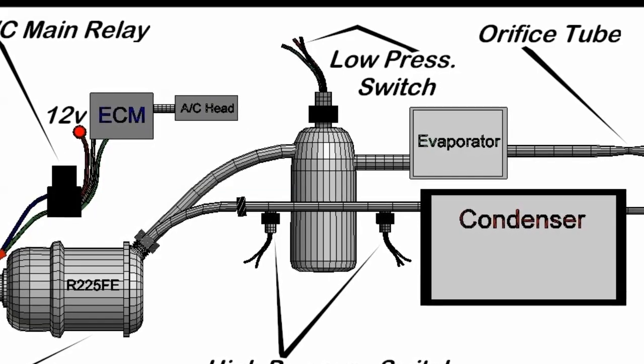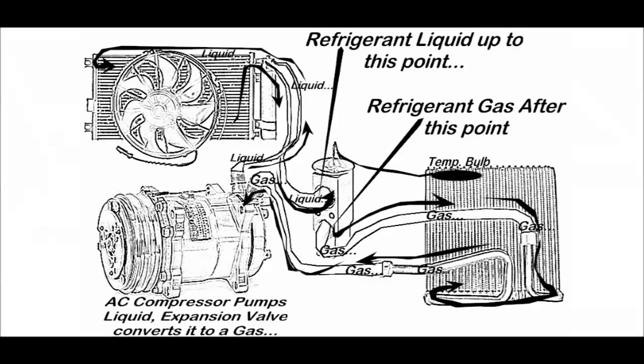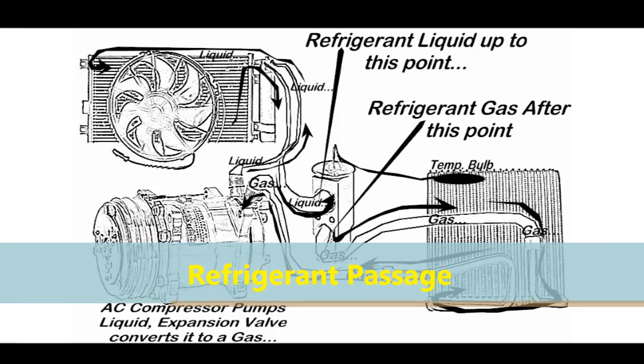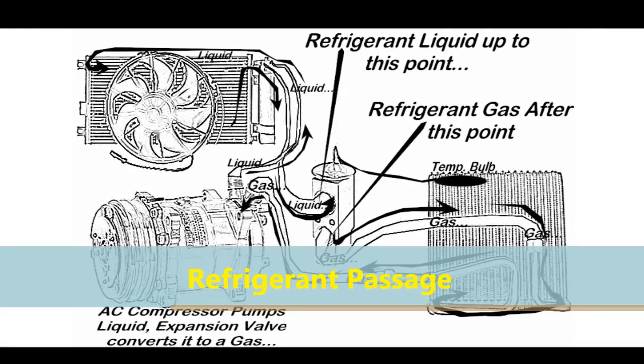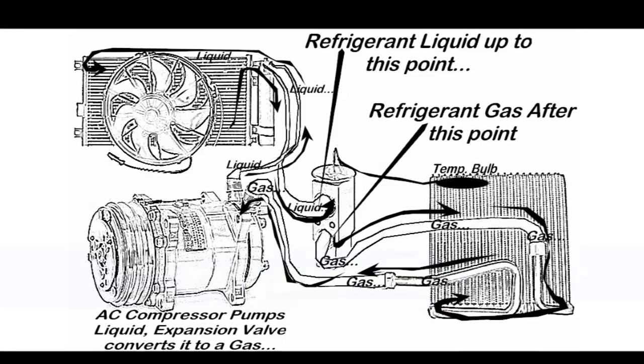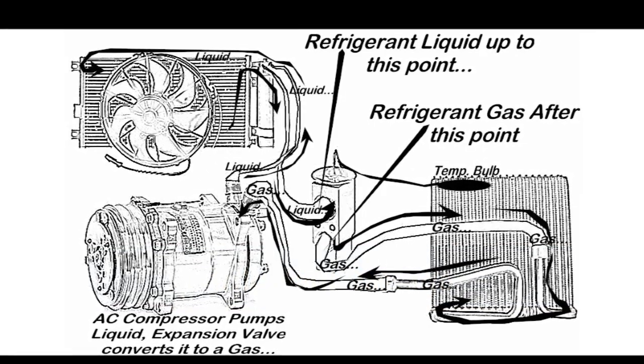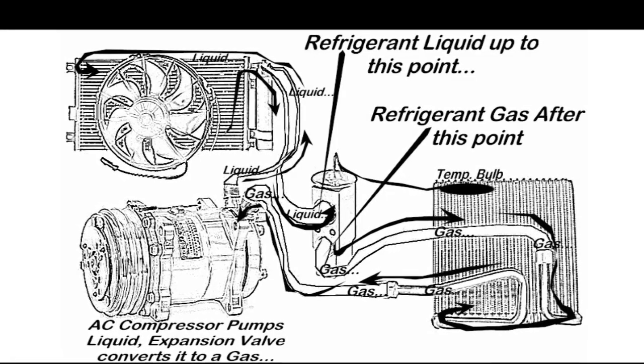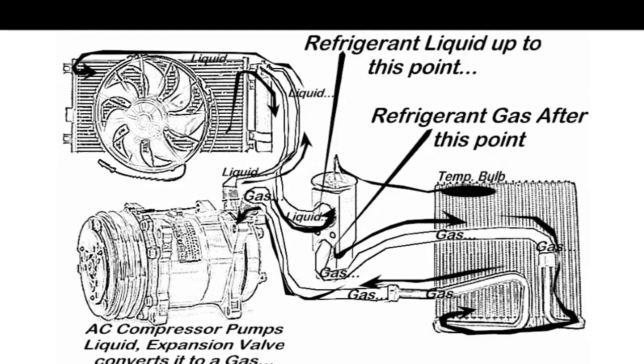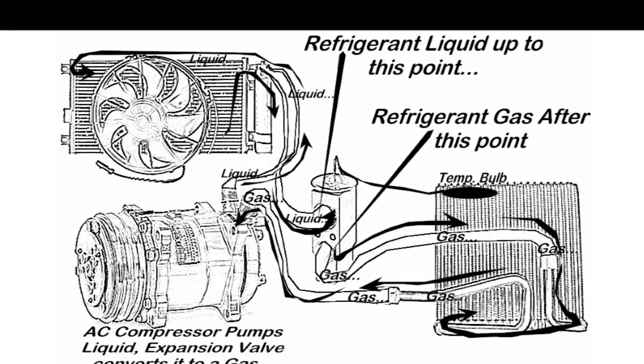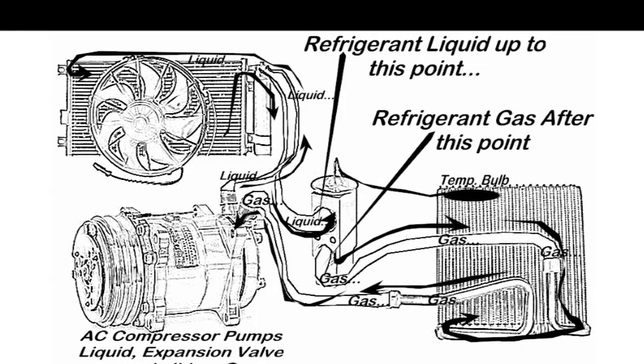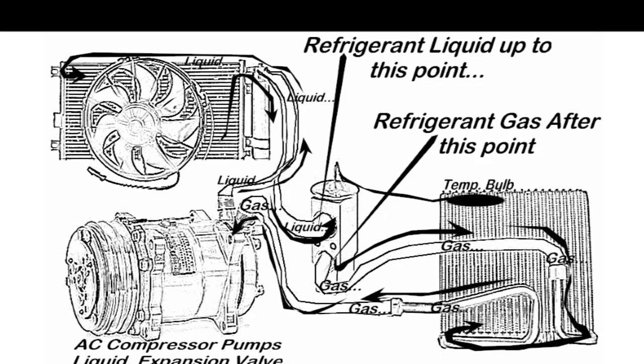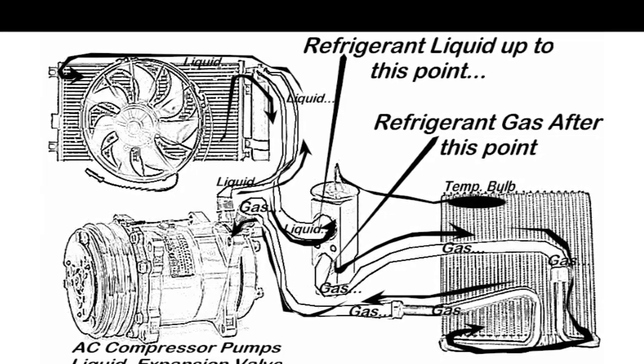Here in this next layout you can see the actual passage of the refrigerant throughout the whole system. It is pumped by the compressor, goes into the condenser, which goes into the refrigerant liquid receiver dryer, which is more like a filter. After that, it goes through the orifice tube or expansion valve and turns into a gas. Once that happens, it gets very cold and goes through the evaporator, and that's what cools the air.